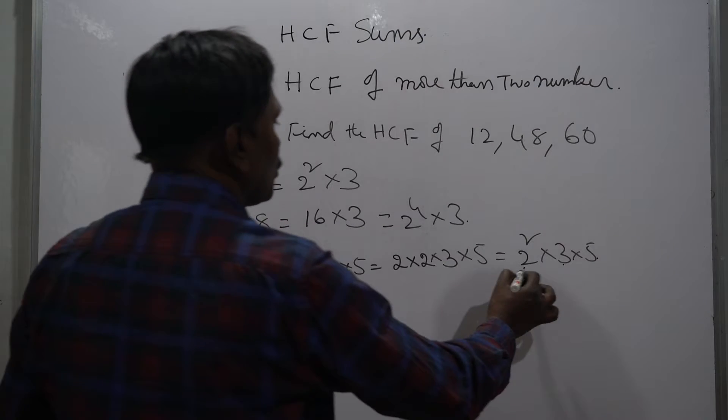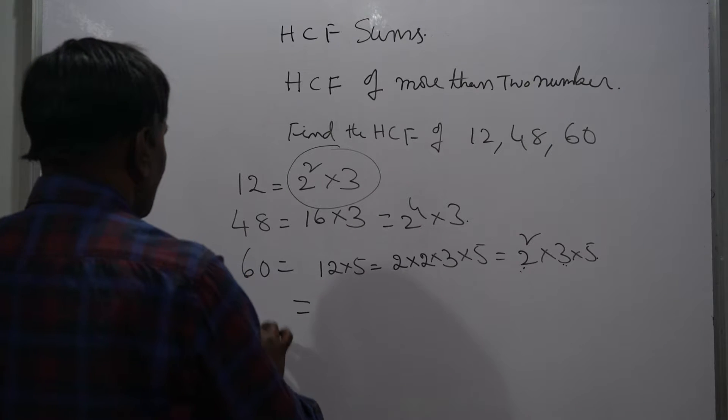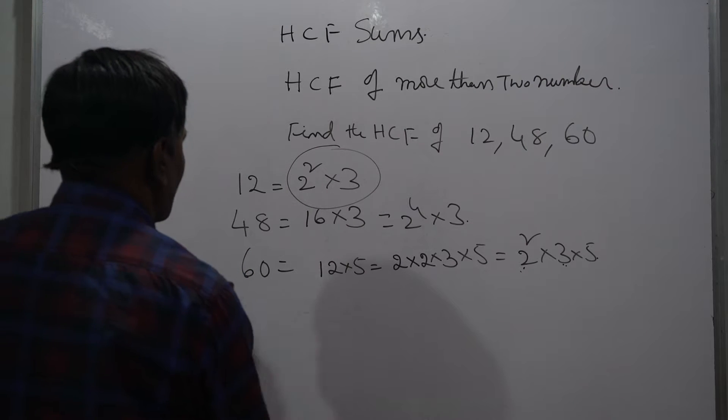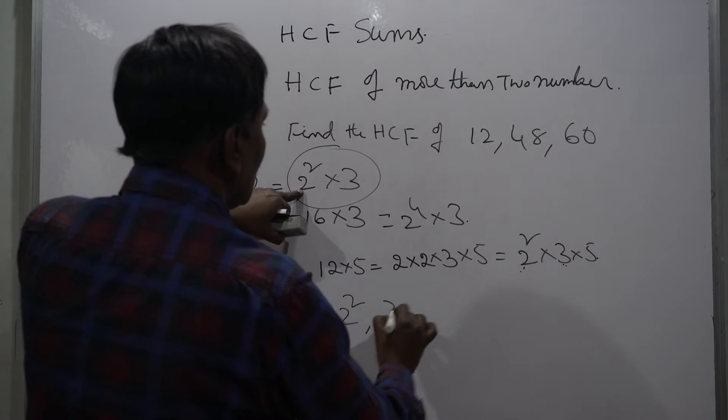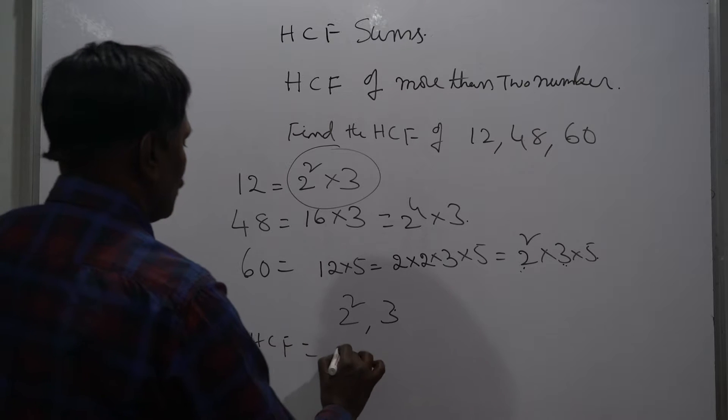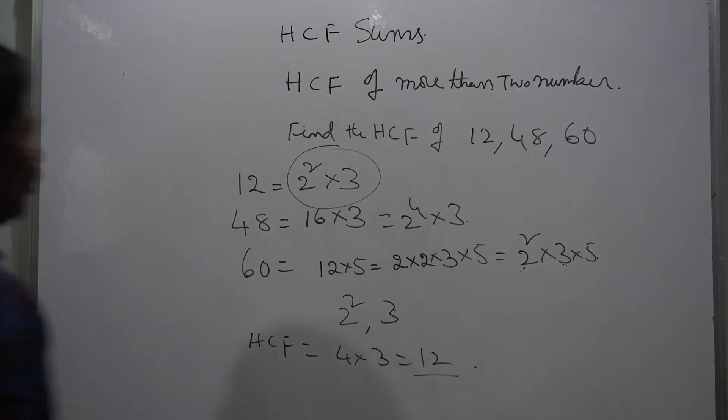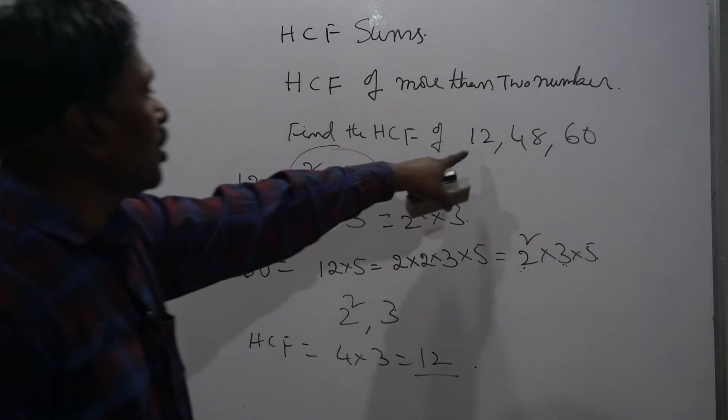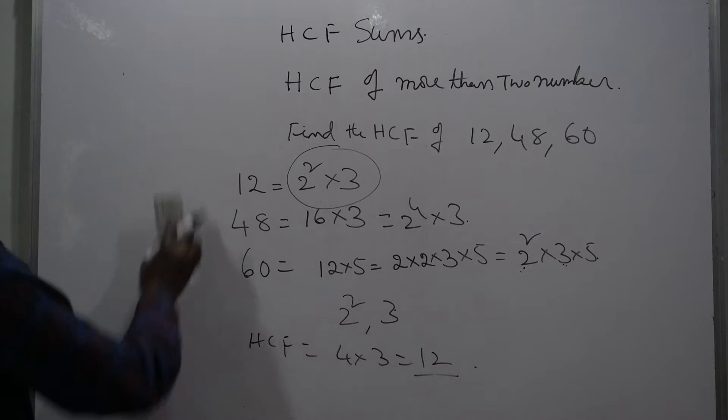We have to take the common prime factors. The common factors are 2 squared and 3. So the HCF is 4 into 3, which is nothing but 12. So HCF of 12, 48, and 60 is 12.